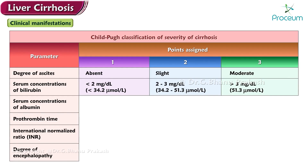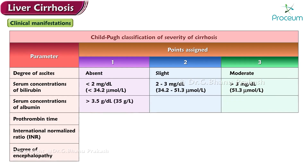For the albumin parameter: one point is assigned for more than 3.5 g/dL (or 35 g/L); two points for 2.8 to 3.5 g/dL (or 28 to 35 g/L); and three points for less than 2.8 g/dL (or less than 28 g/L).